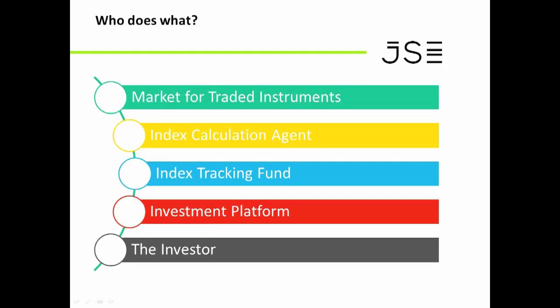At the end of every day, we get a price for every instrument — for our 400, 600, or 1,000 instruments, we get a closing price for each one. Then the index calculation agent comes along and says: now that I've got all of these individual component prices — my basket, if you like — I can go and calculate the average price for the index. That's what the index calculation agent does.